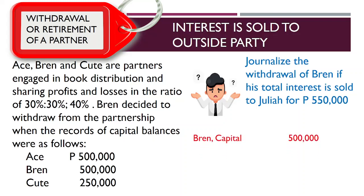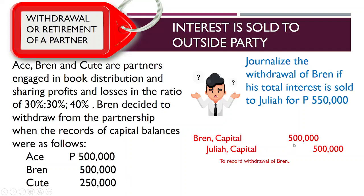In our journal entry, we did not record the $550,000 payment of Julia to Brand. Instead, we only record its book value, which is $500,000. Please note that the difference is a personal gain of Brand, our withdrawing partner.